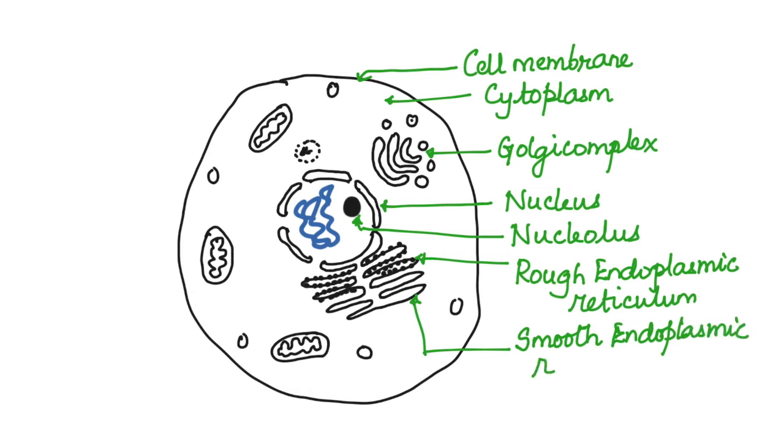The small vesicle-like structures here are the lysosomes, which contain hydrolytic enzymes that can help break down substances.